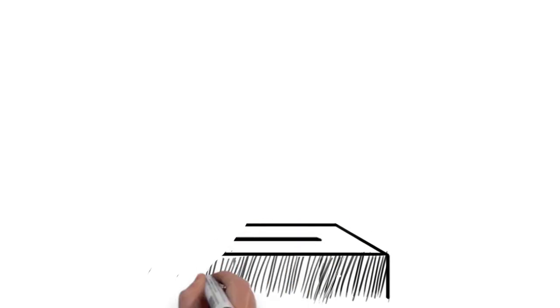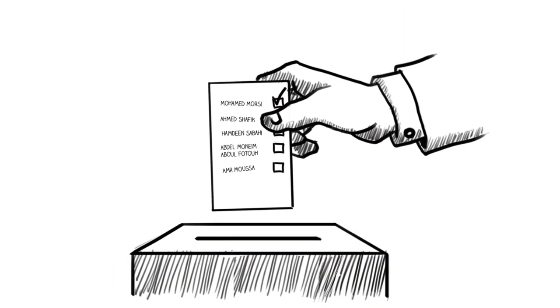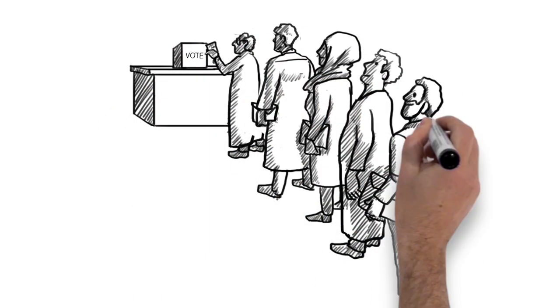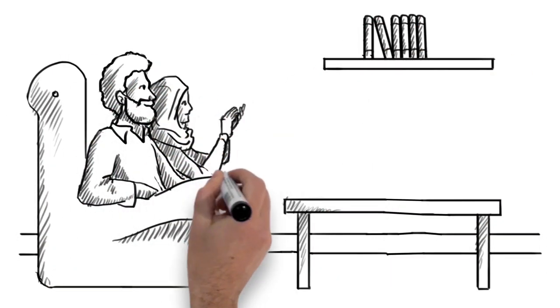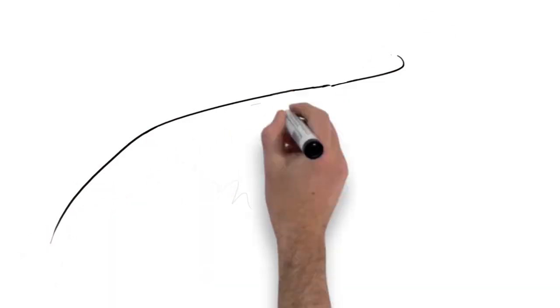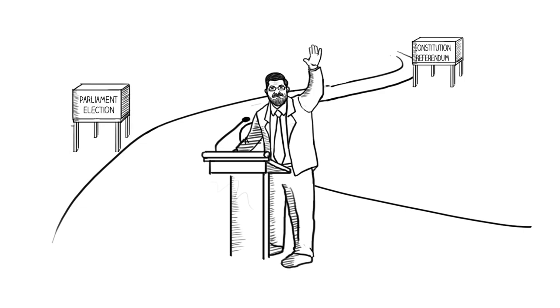In June 2012, the first free and fair democratic elections in Egyptian history took place. Almost half of the electorate participated. Dr. Mohamed Morsi, head of the Freedom and Justice Party, became the first democratically elected president. Morsi paved the way for parliamentary elections and a constitutional referendum.